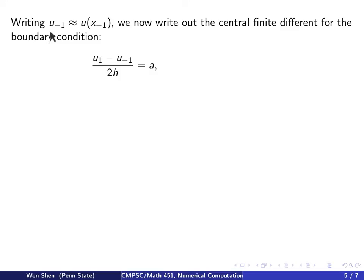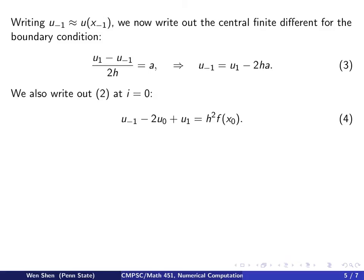We write u_{-1} as the approximation of u at x_{-1}. We can now write out a central finite difference for the boundary condition. u'(0) is approximated by (u1 - u_{-1})/(2h) = a. I can write u_{-1} in terms of the others: u_{-1} = u1 - 2ha. We assume the Poisson equation also holds exactly at x = 0.